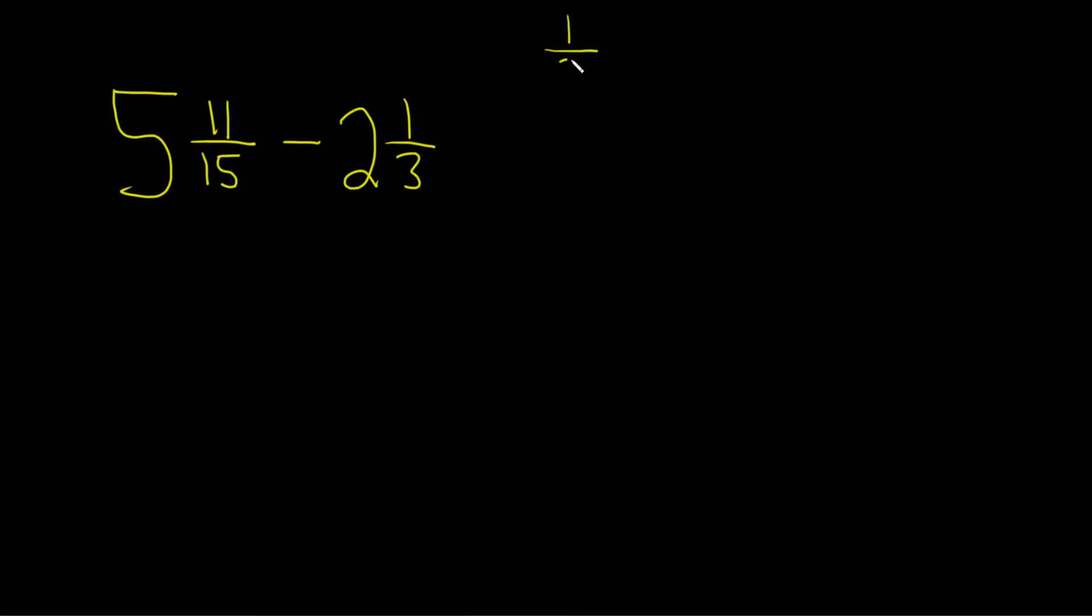So if you take 1/3 and you multiply it by 5/5, that'll do it. Because we're basically multiplying by 1, this will be really 5/15. So now we can just erase this and call it 2 and 5/15.